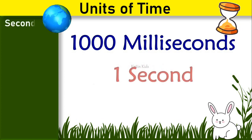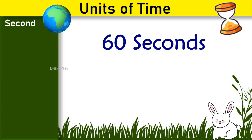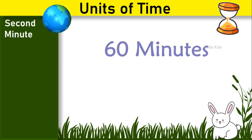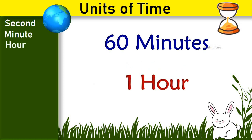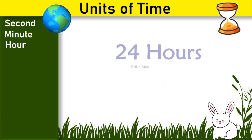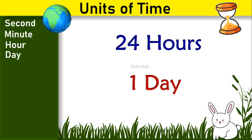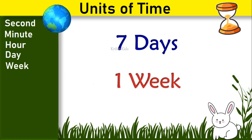1,000 milliseconds make 1 second. 60 seconds make 1 minute. 60 minutes make 1 hour. 24 hours make 1 day. 7 days make 1 week.